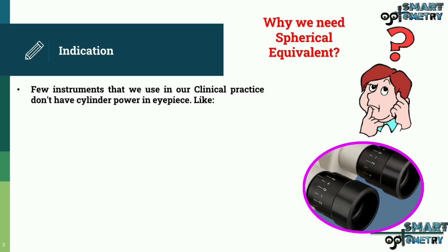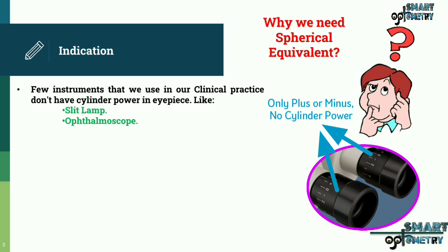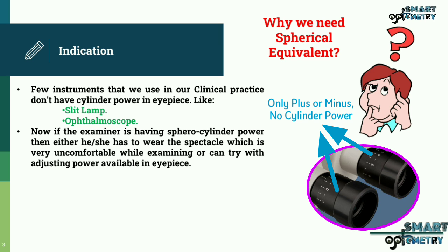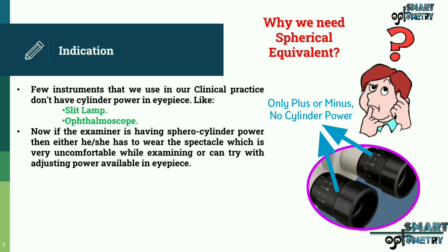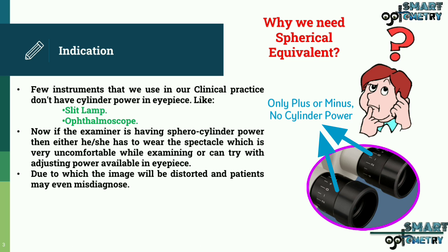Now, why do we need spherical equivalent? Some instruments used in clinical practice don't have cylinder power in the eyepiece, like the slit lamp or ophthalmoscope. If the examiner has sphero-cylindrical power, they either have to wear spectacles, which is very uncomfortable while examining, or try adjusting the available eyepiece power. But cylinder power is not available in the eyepiece of these instruments, causing the image to be distorted and potentially leading to misdiagnosis.